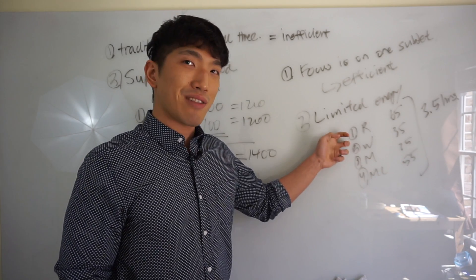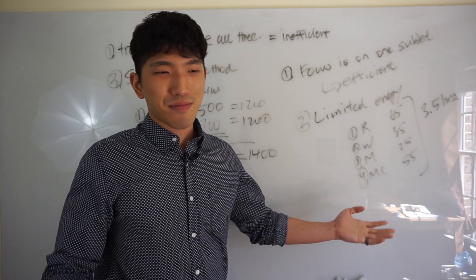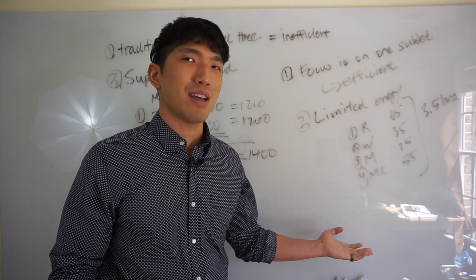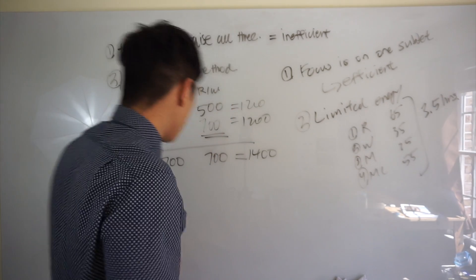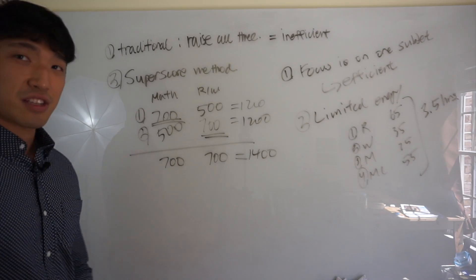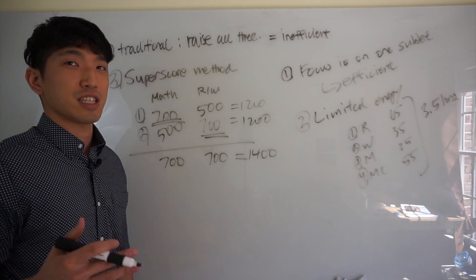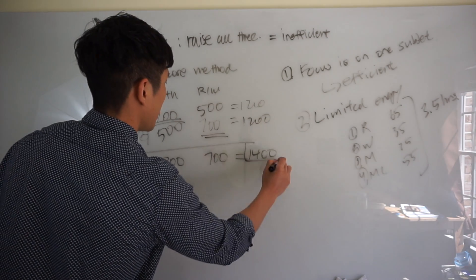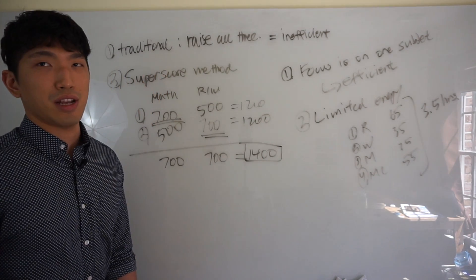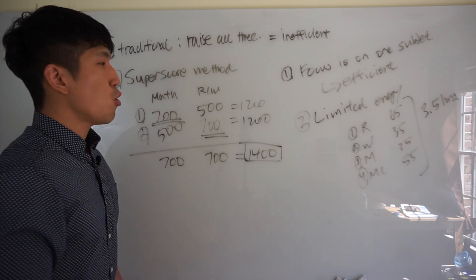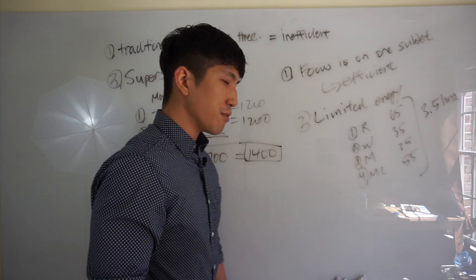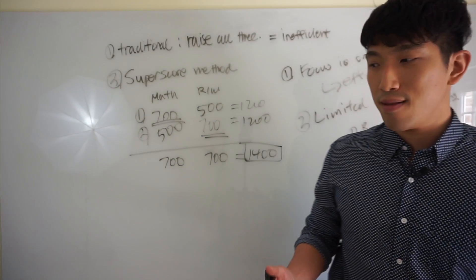So second exam, focus on reading and writing, kind of just try on math, but you're probably not going to have any energy left. So second time you take it, you're going to get a score like that. So even though it's 1200 on each exam, your final score that you're going to send to colleges is actually going to be 1400. Does that make sense? So that's the benefit, that's the power of utilizing a super scored method.